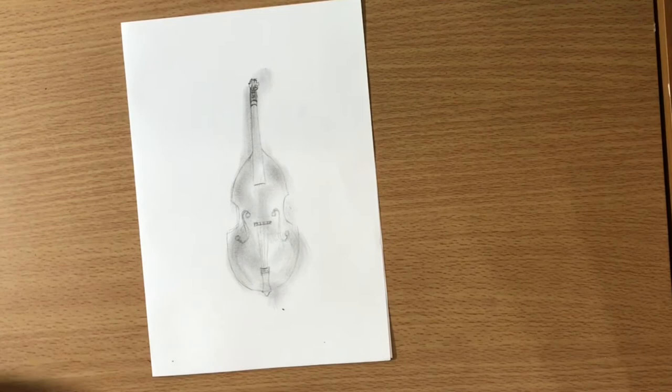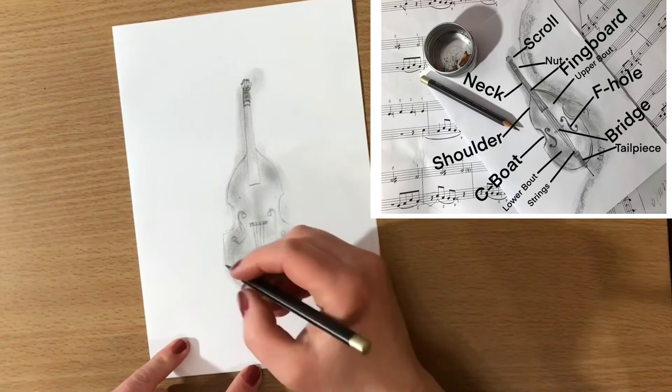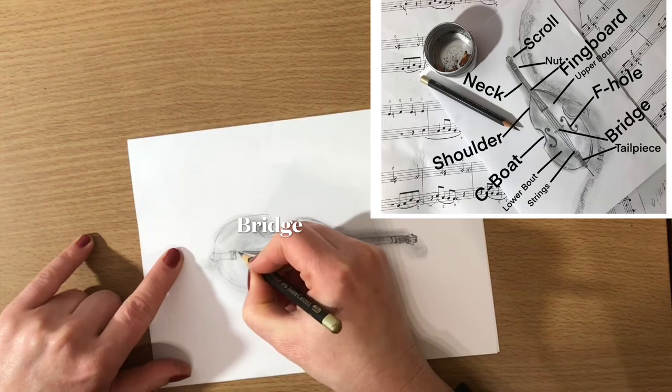And now let me just tell you a few things about how the bass is constructed. Okay, so we have the scroll, we have the tuning machine, the nut, the bridge that I already talked to you about, and the tailpiece.